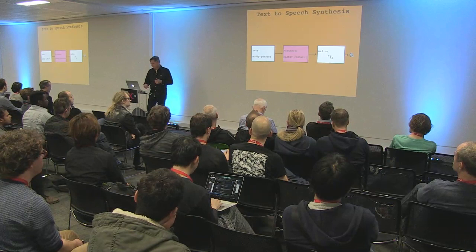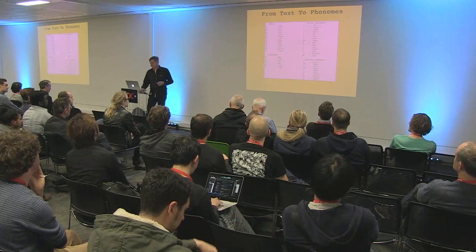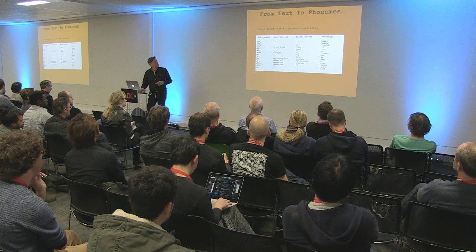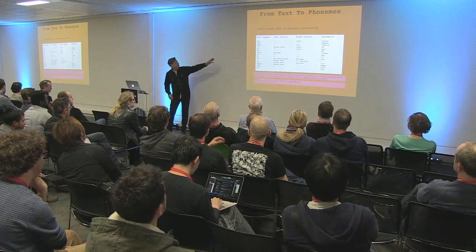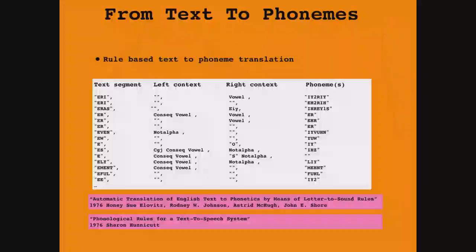For text-to-phoneme conversion, there are rule-based approaches where you have a text segment with left and right context yielding the resulting phoneme. You iterate through rules, check if context matches, and output the phoneme. This was developed in 1976, interestingly in two very similar papers both published that year, both mainly by women.